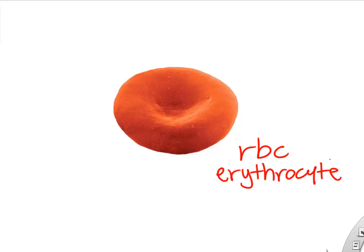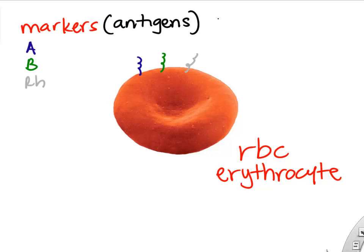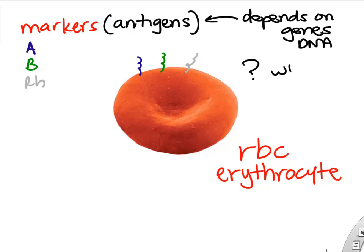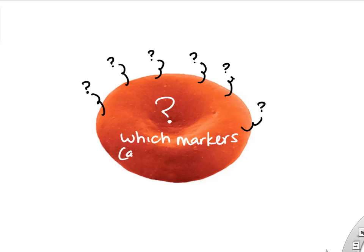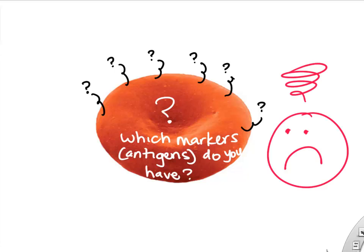In order to figure out your blood type, we need to know the markers that you make on the surface of your red blood cells. The markers that we typically care about are the A, B, and RH marker, and these stick off the surface of your red blood cells like little flags. Antigens is simply another name for markers. Your genetics — your DNA instruction book — determines which markers you'll make. In this red blood cell we have all three markers, so this person is AB positive blood type. But most of the time we don't know your markers, so we need to figure out what markers your red blood cells have on their surface.